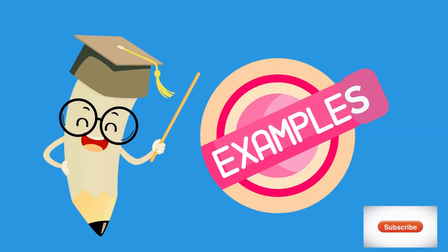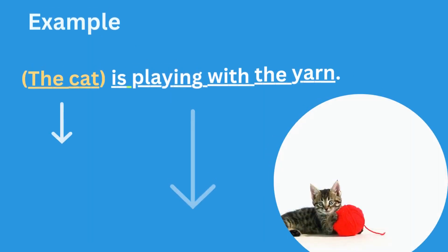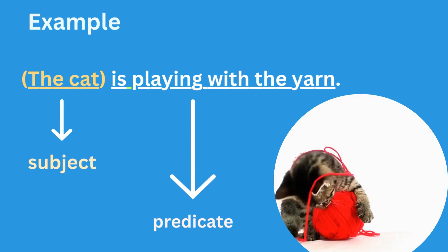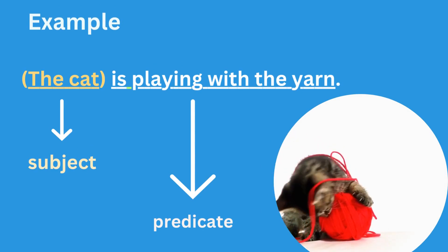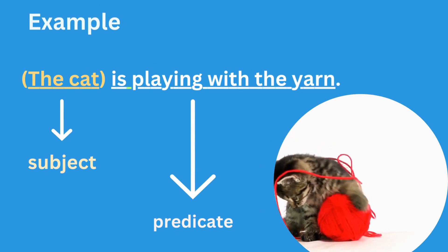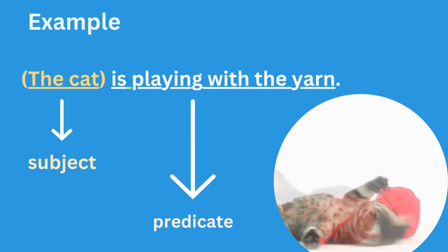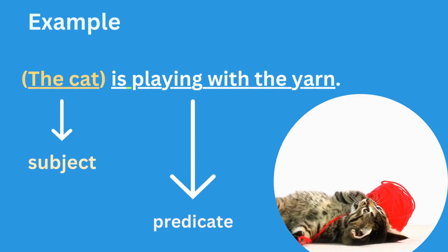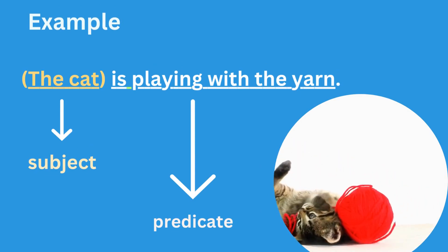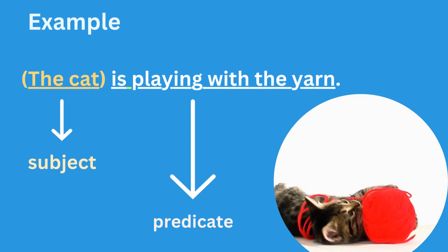Here are some examples of sentences with their subjects and predicates underlined. In this first sentence, the cat is playing with the yarn. The subject of this sentence is the cat, because the cat is who the sentence is about. The predicate in this sentence is is playing with the yarn, because it tells us what the cat is doing.